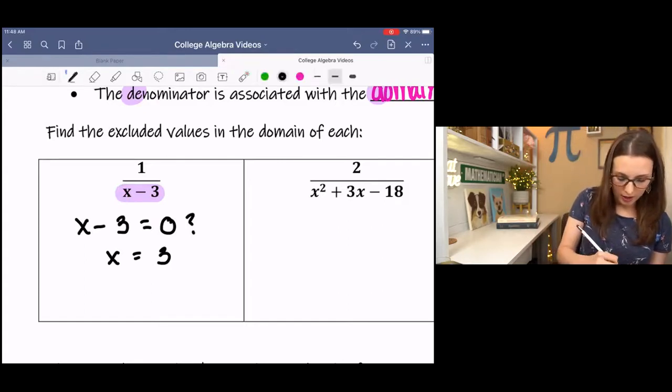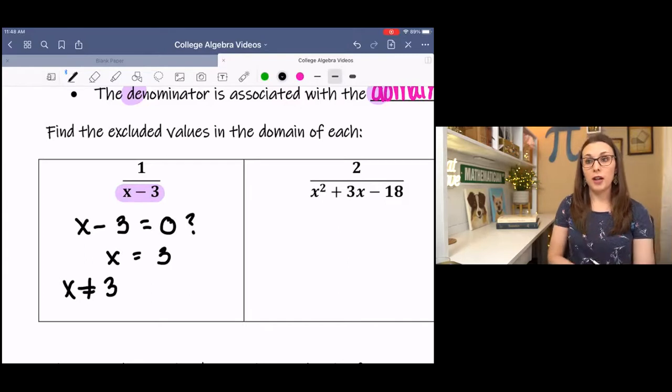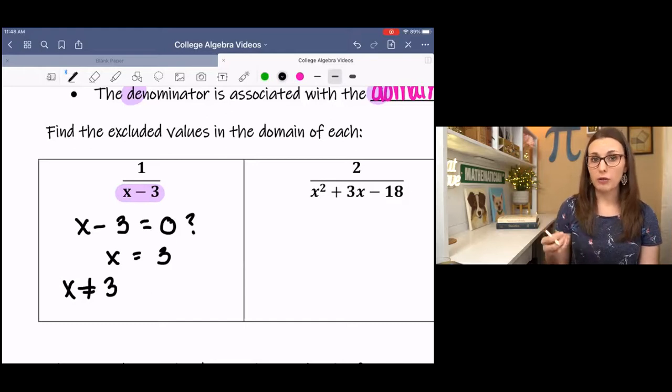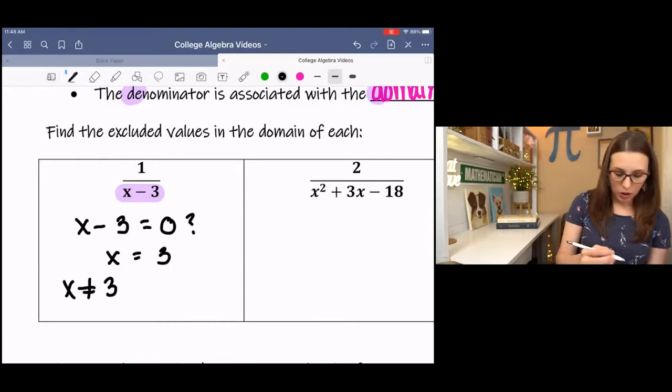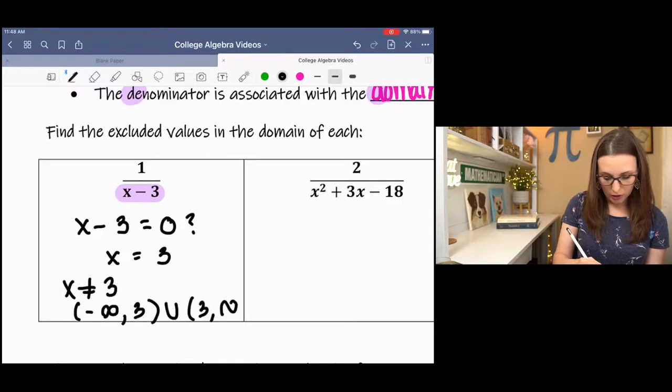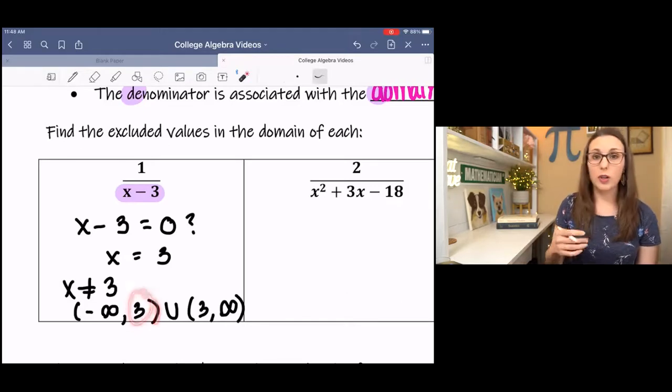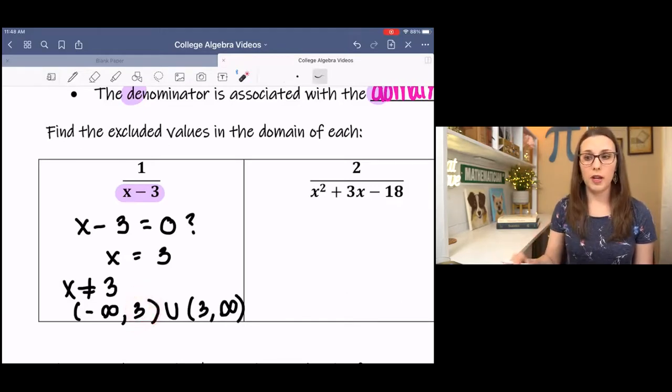So we say that x cannot equal 3 because it would make the function undefined. Now if you had to state the domain, this is stating the excluded value, we would have to exclude 3 from our domain. So if we were to write that in interval notation, we would have negative infinity to 3. And then there's a break in the graph, 3 to infinity. And you put parentheses on the 3 because we cannot include it in our domain. It's skipped.